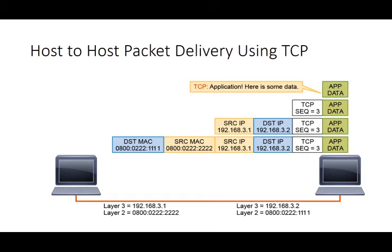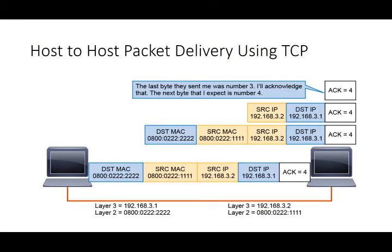TCP looks at the sequence number, confirms it received the data, and hands the application data up to the application. At this point it needs to send an ACK back — the ACK number is one higher than the sequence number of the last byte received, indicating the next expected byte. The ACK goes back with layer three and layer two headers added, sent out on the wire. And now we have established host-to-host communication using TCP.